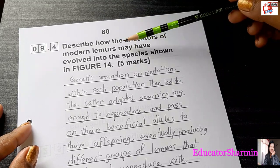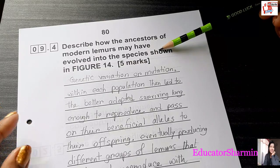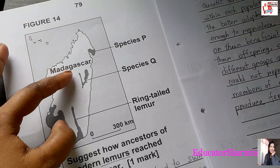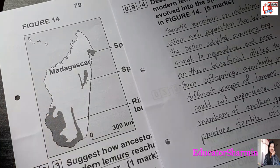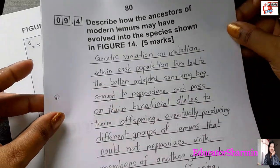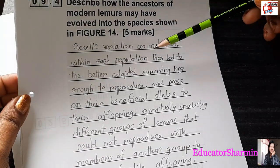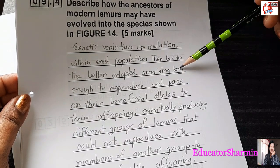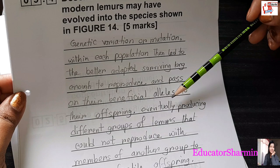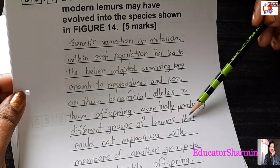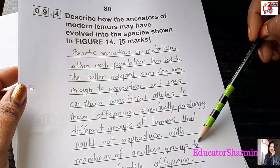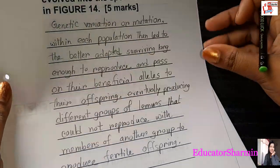Describe how the ancestors of modern lemurs may have evolved into the species shown in Figure 14. There was genetic variation or mutation within each population. This led to better-adapted individuals surviving long enough to reproduce and pass on their beneficial alleles to their offspring, eventually producing different groups of lemurs that could not reproduce with members of another group to produce fertile offspring.